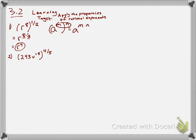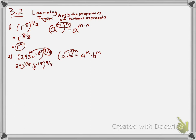If you remember another property from last chapter: if I have a product being raised to a power, I distribute that power to each of the factors in the product — a to the m times b to the m. I'm going to apply that same property, but it's a little uglier because I have a fraction of four-fifths. I'm going to distribute it to the 243, giving me 243 raised to the four-fifths power, and then v to the fifteenth raised to the four-fifths power as well.